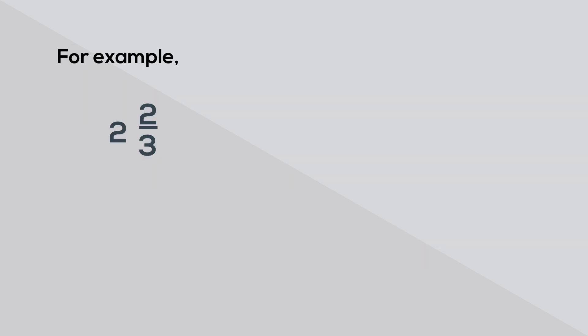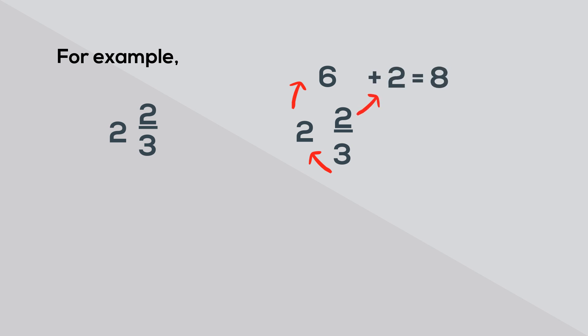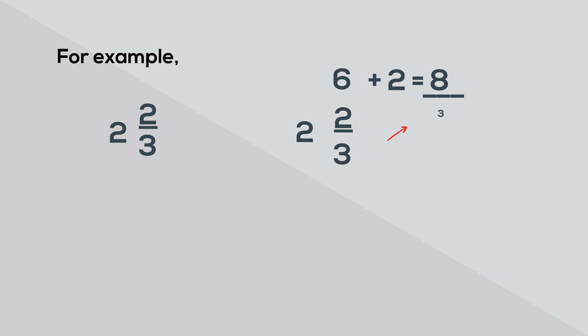Let's convert the mixed number 2 and 2 thirds to an improper fraction. Step 1: multiply the denominator by the whole number — 3 times 2 equals 6. Step 2: add the product of 6 to the numerator — 6 plus 2 equals 8. The 8 becomes the numerator and the original denominator becomes the denominator of the improper fraction.